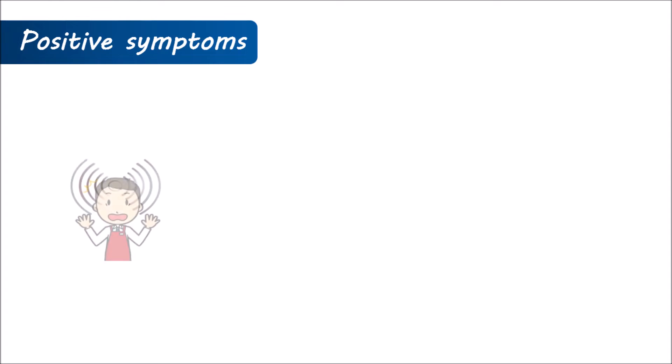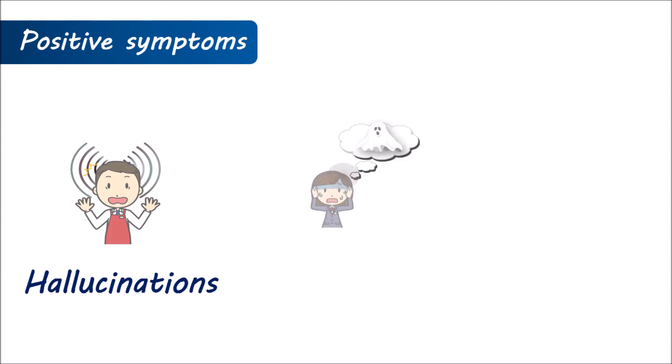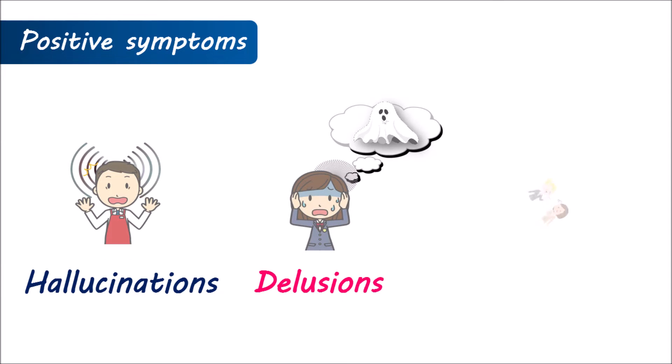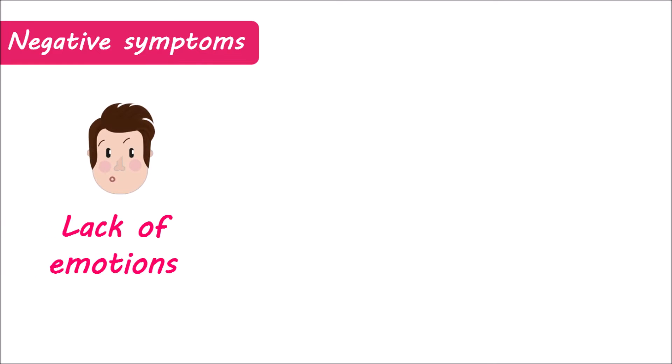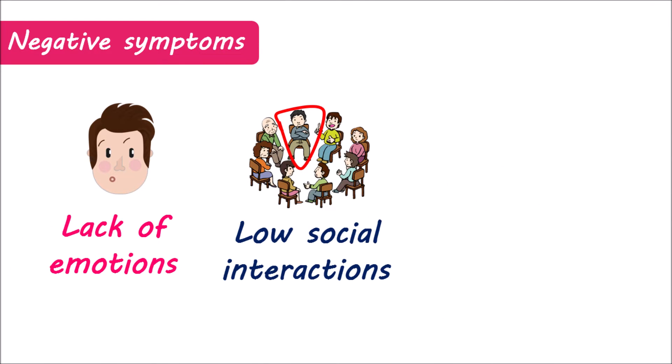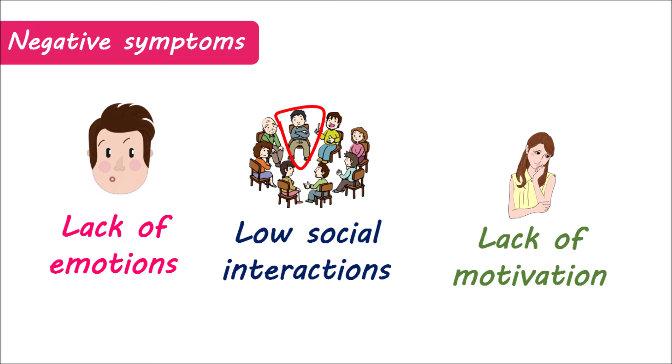Schizophrenia mainly involves positive symptoms like hallucinations, delusions, and disorganized thoughts. Negative symptoms include a lack of emotions, withdrawal from social interactions, and a lack of motivation. Being an atypical antipsychotic, risperidone can control both positive and negative symptoms of schizophrenia.